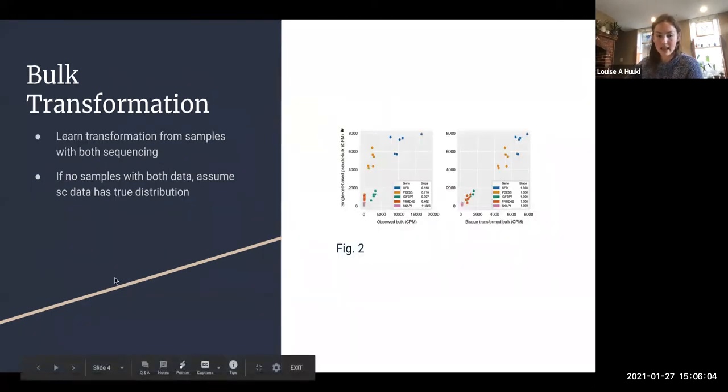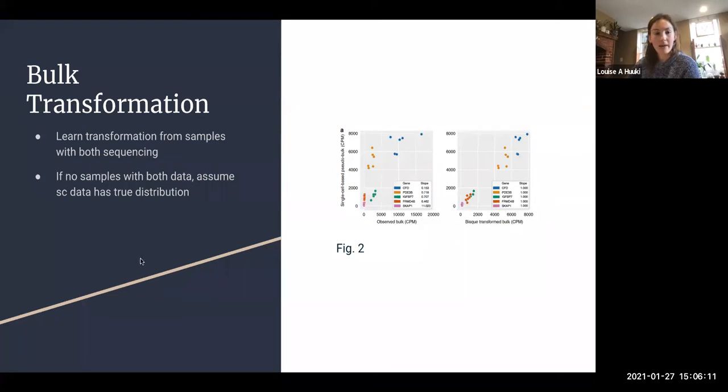This is from their figure two. They show a little bit more of what that bulk transformation looks like. The method can learn the transformation from samples that overlap, or if there aren't overlapping samples they assume that the single cell data has a t distribution. Here they show six genes and seven samples from each gene.